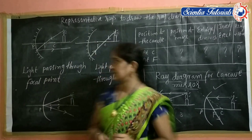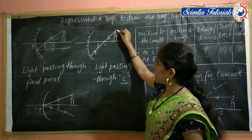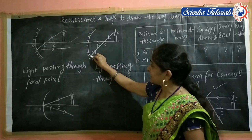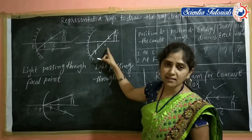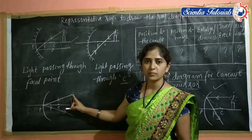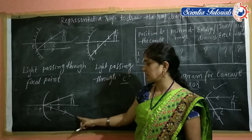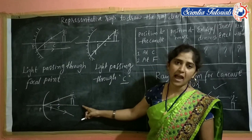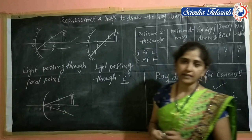Another representative ray: the light ray which is passing through the center of curvature, after falling on the concave mirror, will be reflected back through the center of curvature. One more ray we can take as a representative light ray is the one coming from the object and falling on the pole — it reflects in a specific manner, and for this light, the principal axis acts as the normal. These are the representative rays we use to draw the ray diagrams.